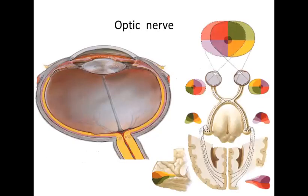The second cranial nerve is the optic nerve. The optic nerve is also a pure sensory nerve, responsible for vision. It begins in the receptors in the retina — the inner coat of the eye. The retina contains ganglion cell layers which have the receptors for light. The optic nerve then passes through the optic canal, or optic foramen, to enter the cranial cavity.